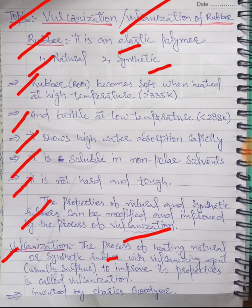What is the definition of vulcanization? The process of heating natural or synthetic rubber with vulcanizing agent, usually sulfur, to improve its properties is called vulcanization.